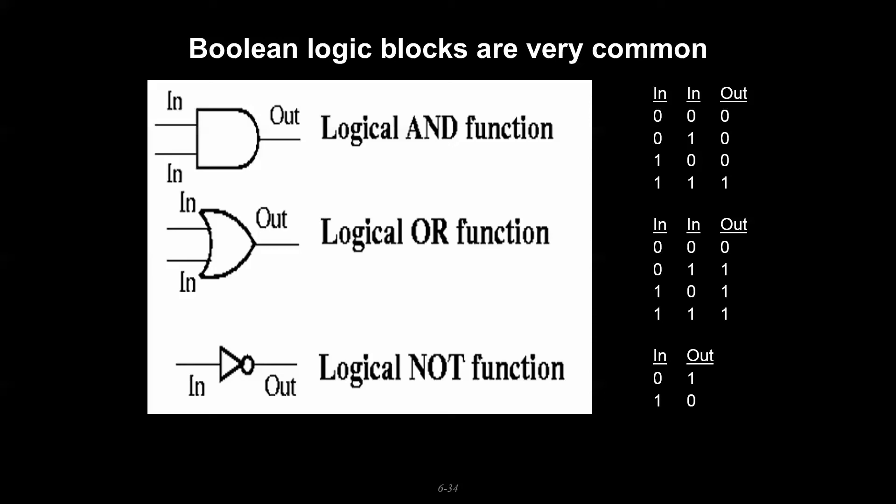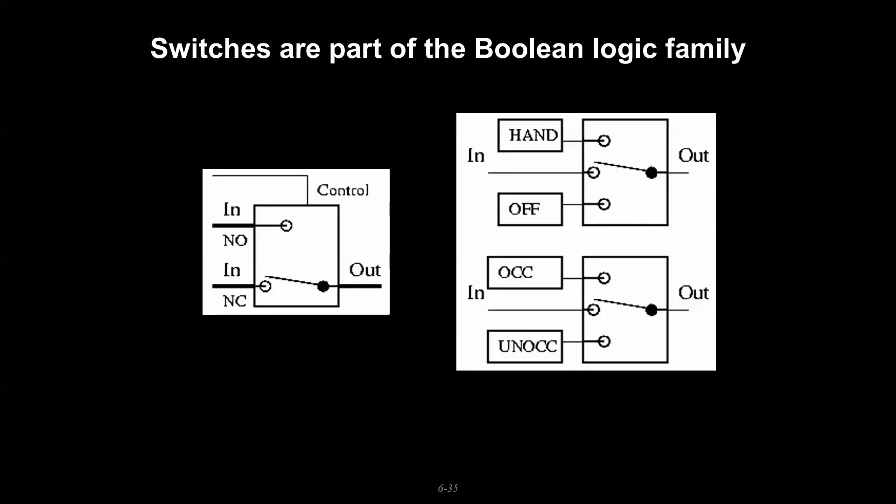Switches are also part of that Boolean logic block family, which is essentially an if/then statement. It has applications where you might see a hand-off-auto block where you're deciding if you're off in manual or hand, or passing through some control loop variable. Same thing with status information like occupied or unoccupied. Essentially what you're doing is giving this control block some type of criteria - if you're in this condition pass this, if you're in a different condition pass that.